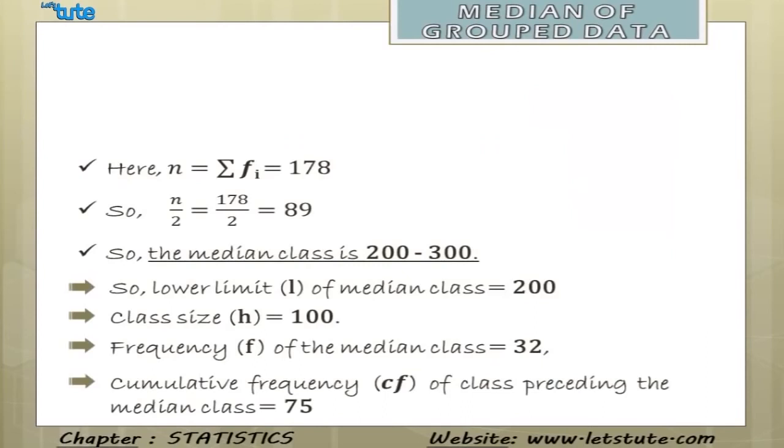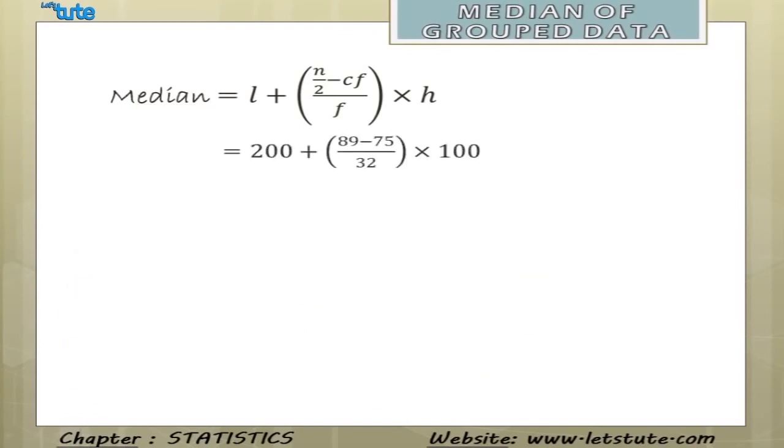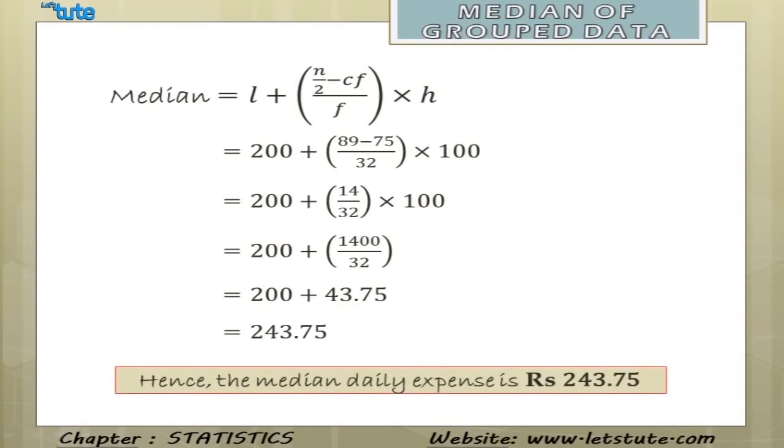Now, we know all these values, we can go on to find the median of this grouped data with the formula L plus N by 2 minus CF upon F multiplied by H. We will substitute all these values and we will get 200 plus 89 minus 75 upon 32 multiplied by 100. Now, 89 minus 75 will give us 14. So, 200 plus 14 upon 32 multiplied by 100. We will multiply the 14 and 100 and we will get 200 plus 1400 upon 32. The ratio 1400 upon 32 will be 43.75 and adding up with 200 will get 243.75. Hence, the median daily expense is Rs. 243.75.